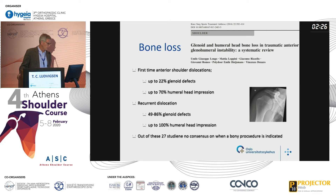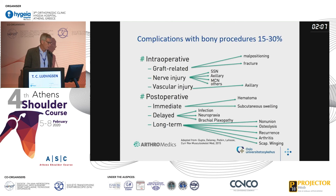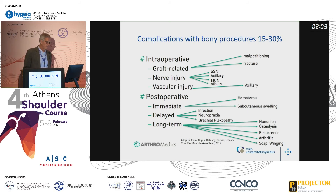This publication showed that first-time anterior shoulder dislocations have up to 22% of glenoid defects and up to 70% of humeral head impression fractures called Hill-Sachs fractures. With recurrent dislocation, the figures are even higher: 49–86% glenoid defects and up to 100% humeral defects. But out of these 27 studies, there was no consensus on when a bone procedure is indicated or what is the critical bone loss.